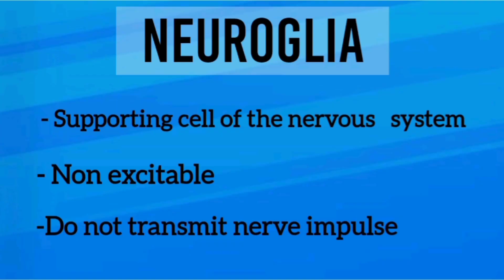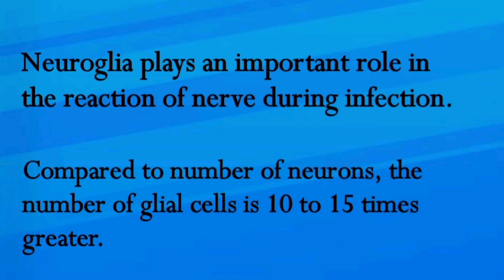Neuroglia, or the glia, is the supporting cell of the nervous system. The neuroglial cells are non-excitable and do not transmit nerve impulse. Neuroglia plays an important role in the reaction of nerve during infection.